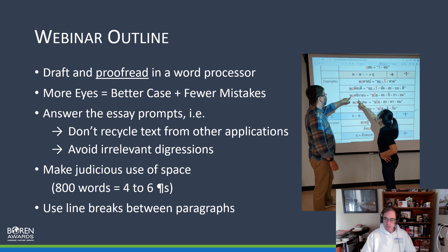Let's cover a few general tips to make your argument as clearly as you can. Although the Boren Scholarships and Fellowship applications permit you to paste and edit your essay directly into the application, we don't recommend this — we strongly don't recommend this. What we'd rather you do is write this in a Word file like Microsoft Word or Google Docs and save that progress. The website is on a timer, so as you're working on these essays in the system, every now and then you want to hit save to make sure you don't lose any progress.